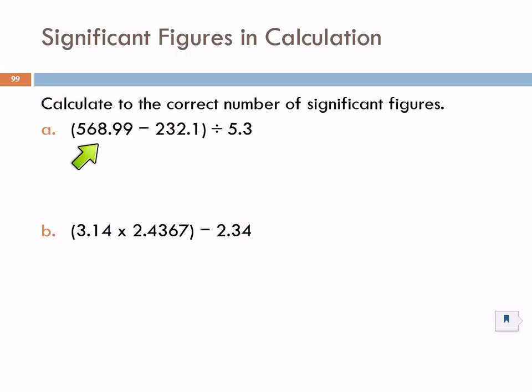In example A, we have a subtraction, and then we're taking the result of that subtraction and dividing by 5.3. We have subtracting and dividing. There are different rules for each of those operations. So we need to consider them separately. First we're going to do this subtraction and find out what the result is. 568.99 minus 232.1.